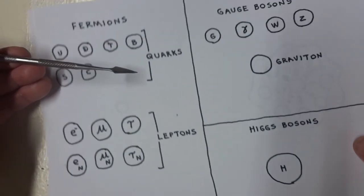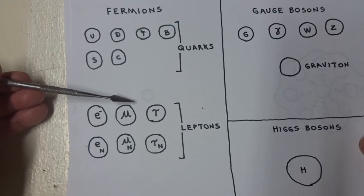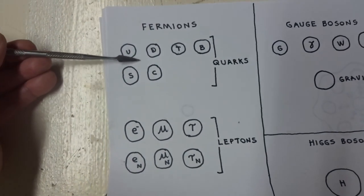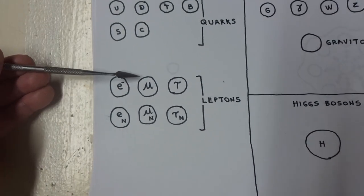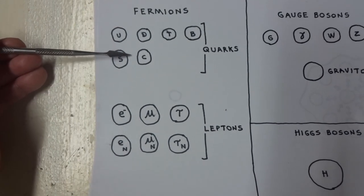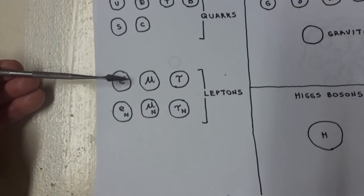Here are the subatomic particles. This is the standard model of quantum mechanics. We have fermions. Fermions consist of the quarks and the leptons.